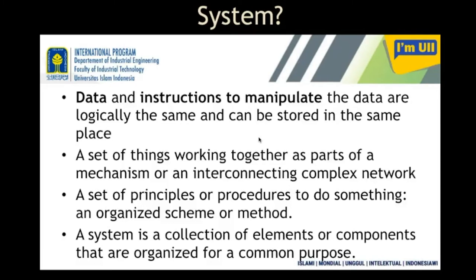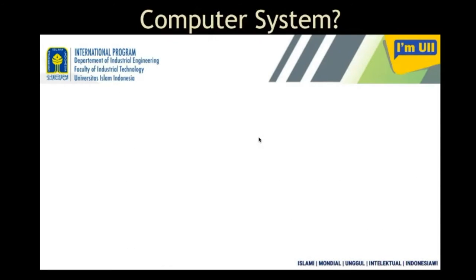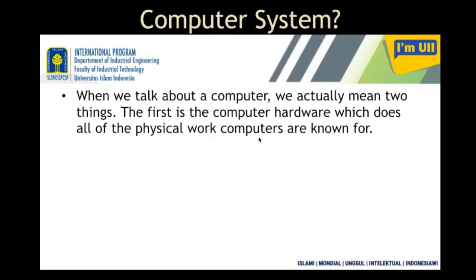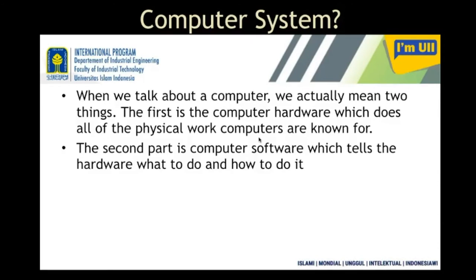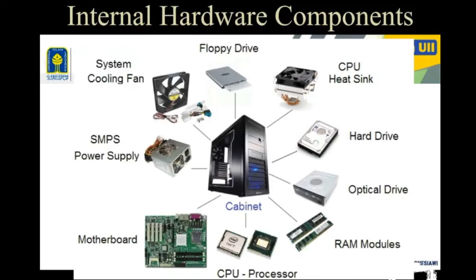When we talk about computers we actually mean two things: one is hardware and another is software. Hardware is the physical devices, as I already said, and software is the thing which helps the hardware to do what to do and how to do it. Hardware components can be present inside your computer system — these are the things included inside your computer.